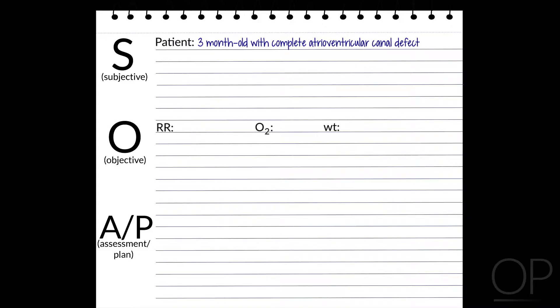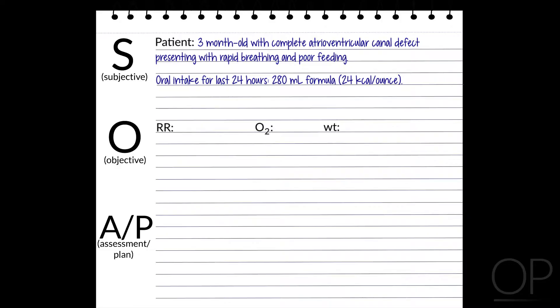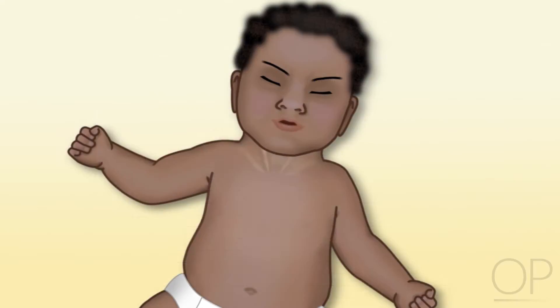A three-month-old baby with a complete atrioventricular canal is admitted with symptoms of congestive heart failure. Mom reports that he is breathing fast and not feeding well. His oral intake for the past 24 hours is 280 milliliters of 24 calories per ounce formula. Respirations are 66 per minute, oxygen saturation is 88% on room air. His weight is 3.7 kilograms, decreased from 4 kilograms on his last clinic visit three weeks ago. The baby has nasal flaring and subcostal retractions.